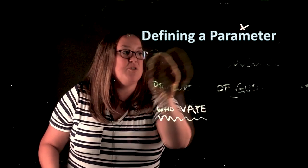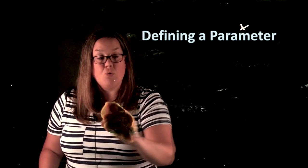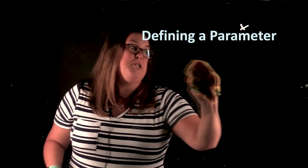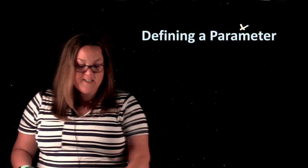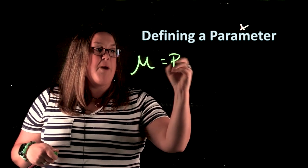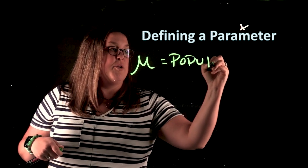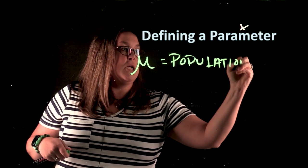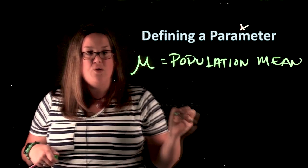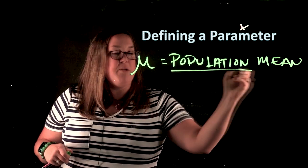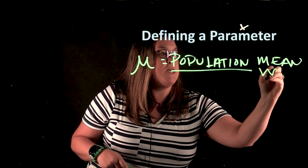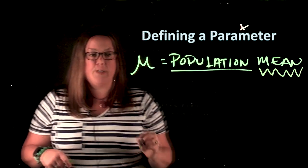So then the next one that we talked about was mu. Mu is going to be population mean, so it would have a similar feel to it. This is the population mean, but you need to make it specific to the data that you've collected. Population is the group we want to make an inference on, and the mean is the measurement that we're interested in.